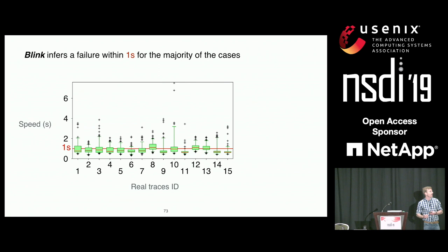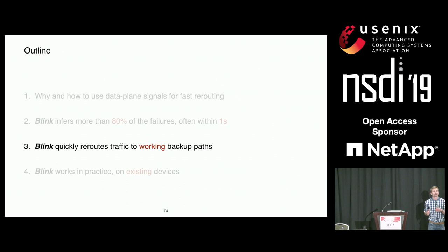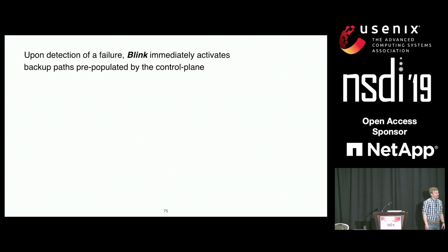Now I'll show you that Blink can quickly reroute traffic to a working backup path. When Blink detects a failure, it immediately activates backup paths that are pre-populated by the control plane. The backup paths are pre-populated prior to failure, but upon the failure, everything is done entirely in the data plane.